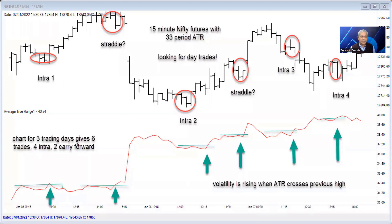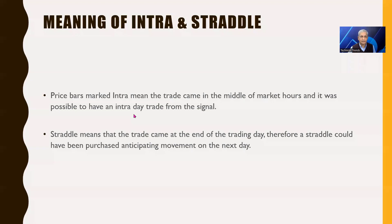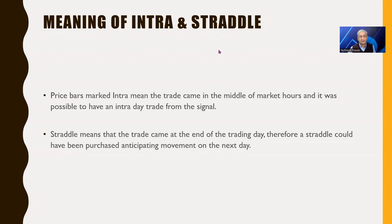In three days we got six trades — four intraday and two carry-forward. That's pretty good. An intraday trade is a trade that you settle on that day itself. A straddle is simply buying a put and a call both, because you know that tomorrow there will be expansion but you don't know which side. You buy these options hoping that one of them will make enough money to compensate for the loss of the other and also make a profit. That's the straddle — buying a call and a put together in anticipation of a big move.